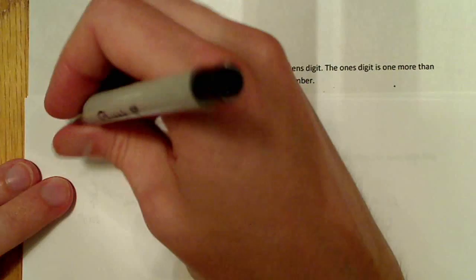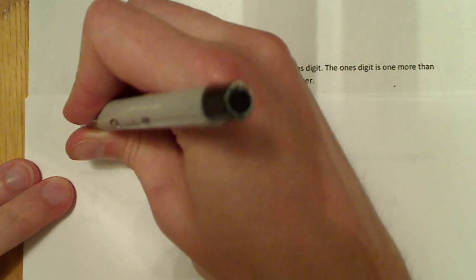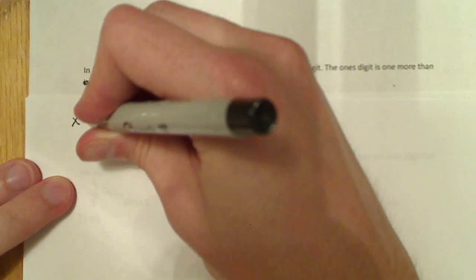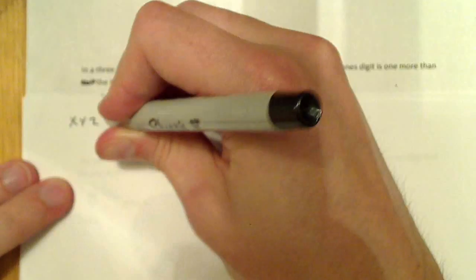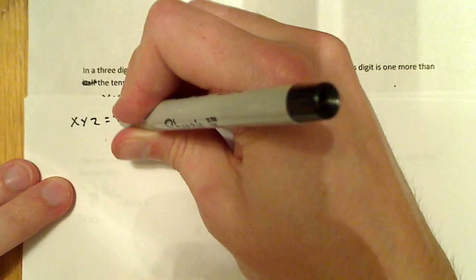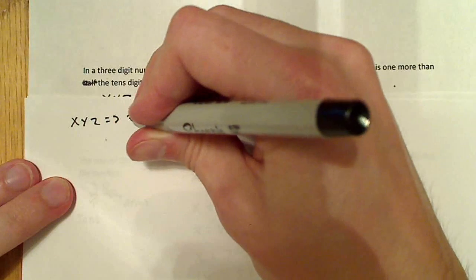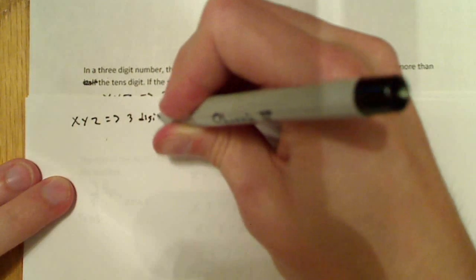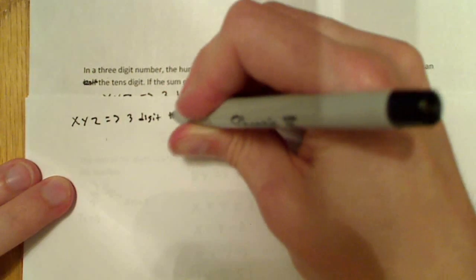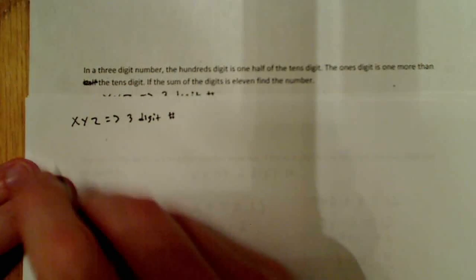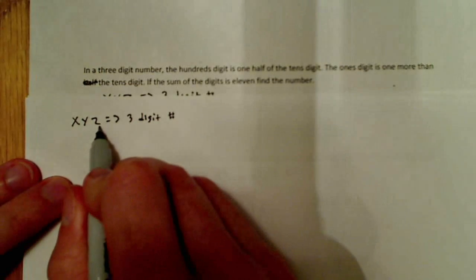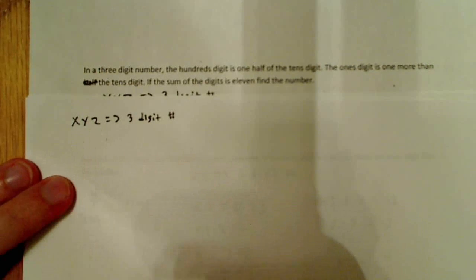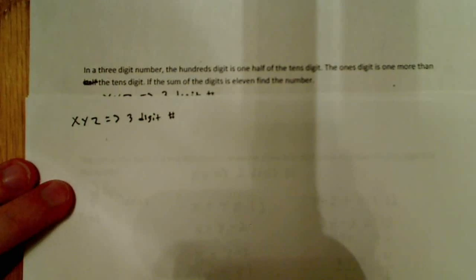So now we have x, y, and z, and I'm going to define that as my three-digit number. This is the hundreds digit, tens digit, ones digit — just for clarity.